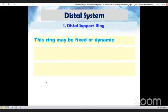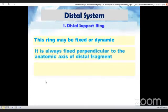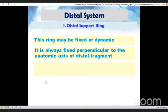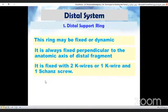The distal support ring may be either fixed or dynamic. It must be fixed perpendicular to the anatomical axis of the distal fragment, either with two K wires or one K wire and one Schanz screw.